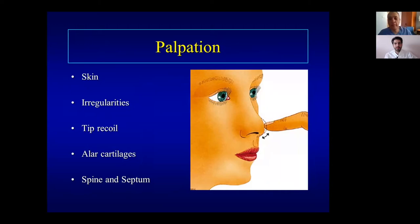Now palpation. Feel the skin to assess thickness. Feel for any irregularities underneath if the patient has had previous rhinoplasty. Push the tip in — if it goes in and returns very slowly, there's likely no cartilage inside, so you'll need cartilage grafting. Feel the alar cartilages — are they strong or weak? Also palpate the nasal spine and septum to check if they're strong, collapsed, or deficient, which can occur after previous surgery or abscess.